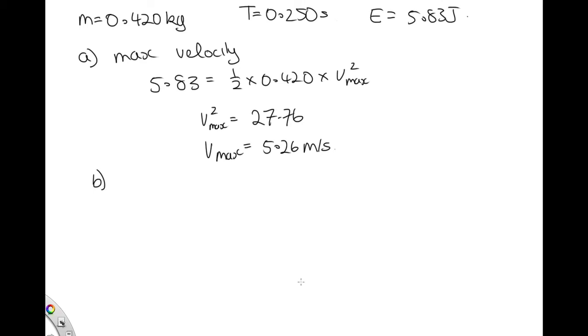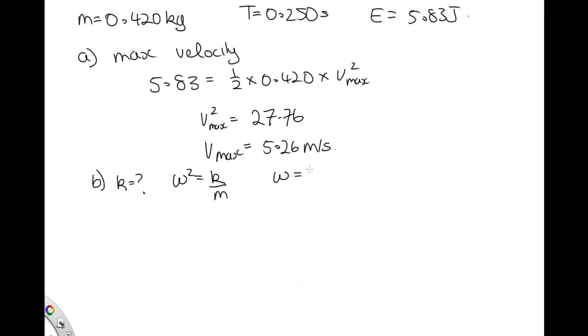Part B asks us to find the force constant, k, for the spring. Now we know that omega squared is equal to k over m, and that omega is equal to 2π over T. And we have T, so we know that omega is equal to 2π over 0.250, so that is going to give us 8π.